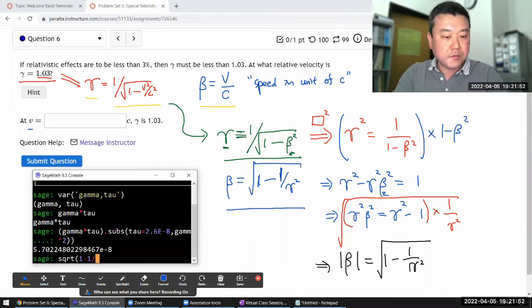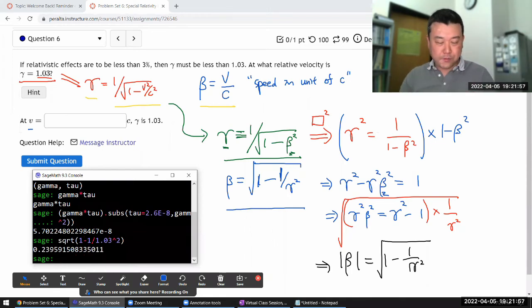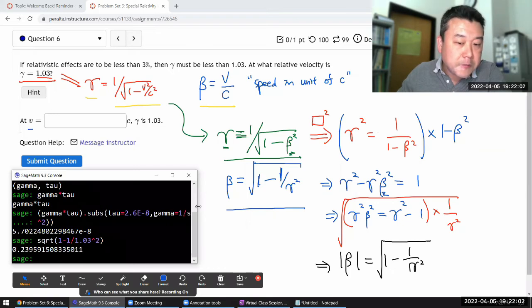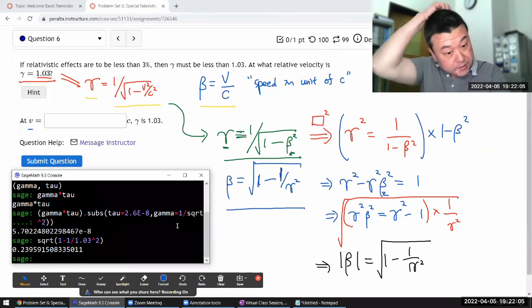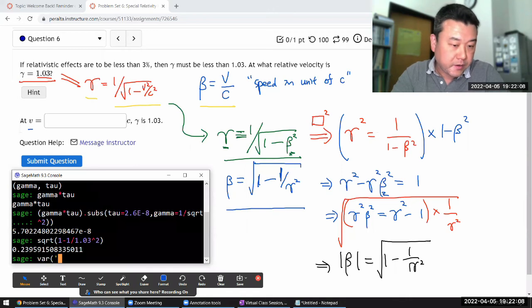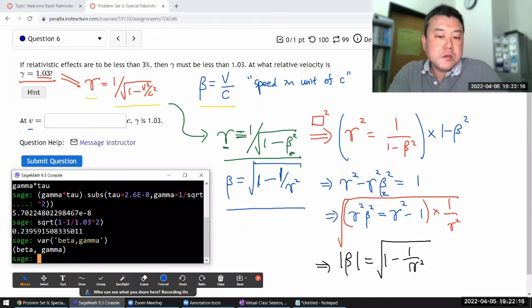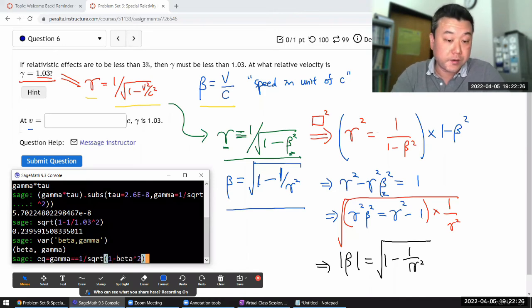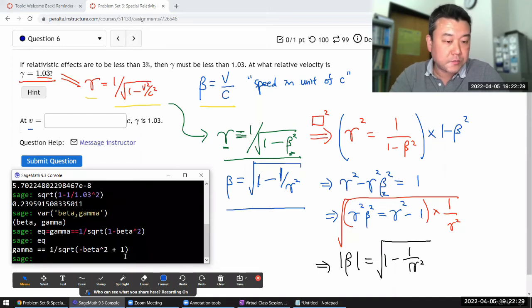Square root of 1 minus 1 divided by gamma squared. I can definitely do that, and that will be the answer. Now, if you're using SageMath, SageMath has some really wonderful tools. That's nice. Let me declare some variables to help me use this symbolic algebra tools. I'm declaring variables of beta and gamma. So, what I have is the equation that gamma is equal to 1 divided by square root of 1 minus beta squared. This is the kind of the syntax for specifying equation.